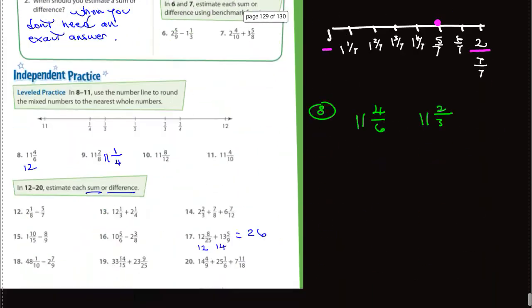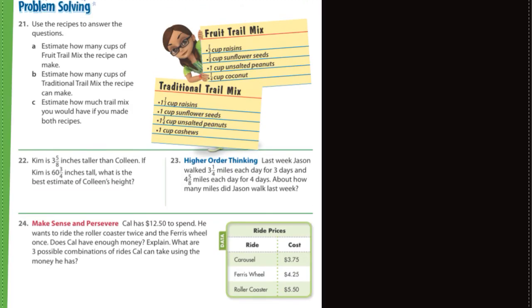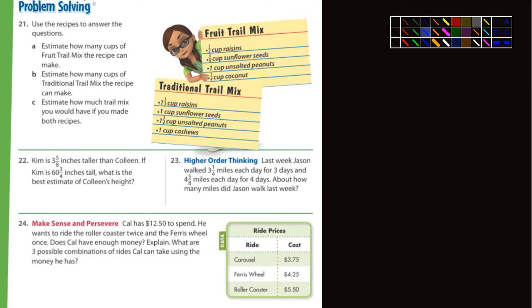Okay, last page. Problem solving. Use recipes to answer the questions. Estimate how many cups of fruit trail mix the recipe can make. So here's 1 full cup, and then we have, looks like 3/8 of a cup, and 1/2 a cup, and then 1/4 cup. So you're gonna basically estimate adding those up and see if it's closer to, you know, like 2 or 3 cups, or 1 or 2 cups, or 4 or 5 cups. You'll have to figure that out.